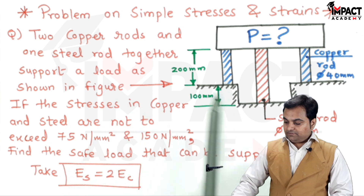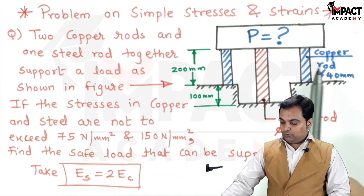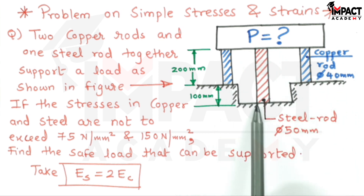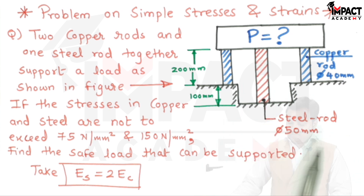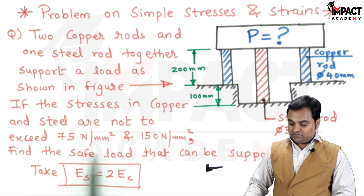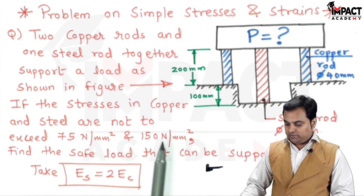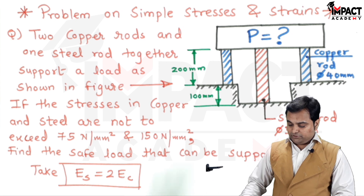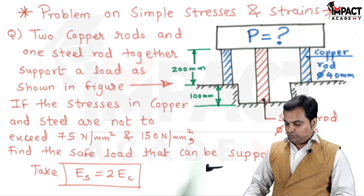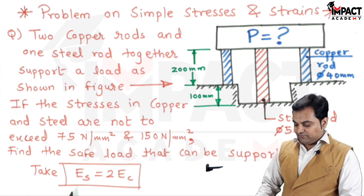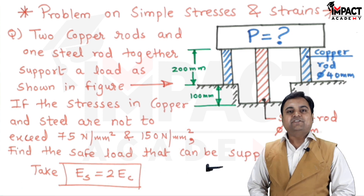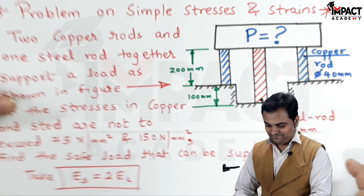From the diagram we can see that at both the ends we have copper rods having a diameter of 40 mm, and in between them we have a single steel rod having a diameter of 50 mm. The stresses in copper and steel are not to exceed 75 N/mm² and 150 N/mm² respectively. We have to find the safe load that can be supported, and it is given that the Young's modulus of steel is twice that of copper.